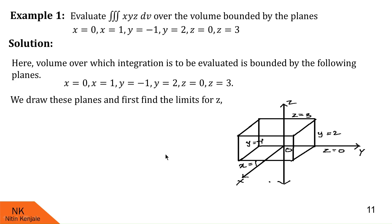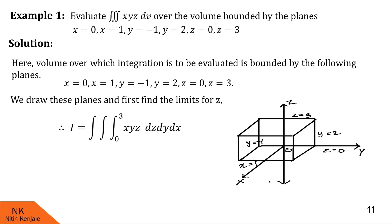Now let us find the limits for z. For that, we throw arrows parallel to the z-axis from bottom to top and observe which planes these arrows cross. They cross the plane z=0 (the xy-plane) to enter the volume, so z=0 is the lower limit. Then they cross the upper surface z=3 to exit, so z=3 is the upper limit. The inside integral has limits 0 to 3.